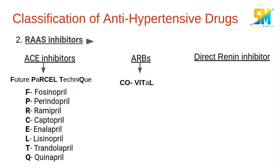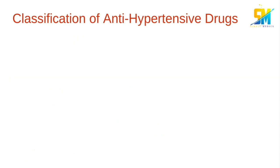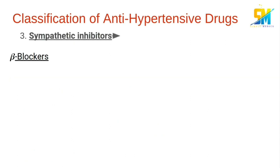We can remember the ARBs by the mnemonic COVITAL: candesartan, olmesartan, valsartan, irbesartan, telmisartan, losartan. Direct renin inhibitors include aliskiren. The third category is sympathetic inhibitors, which include beta blockers, alpha and beta blockers, alpha blockers, and central sympatholytics.